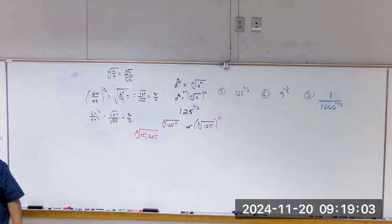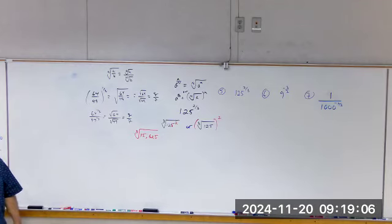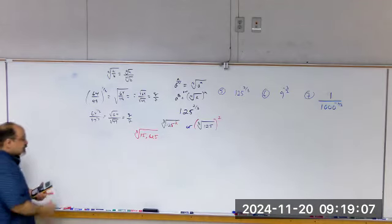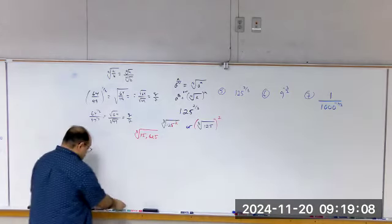To break out of cube root jail, we need groups of three. So we start breaking 15,625 apart.